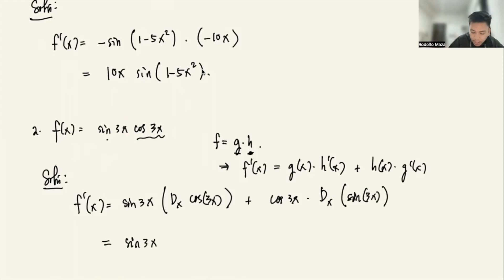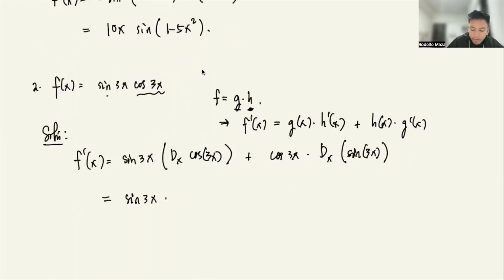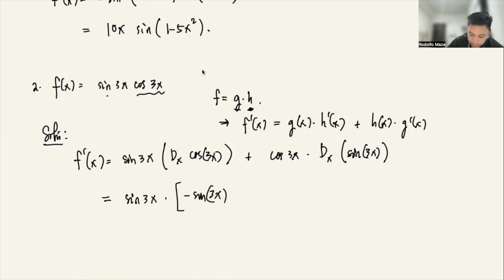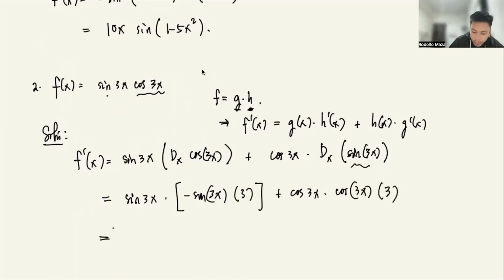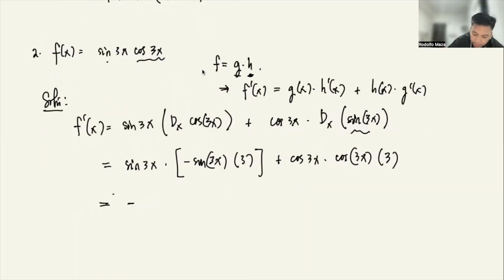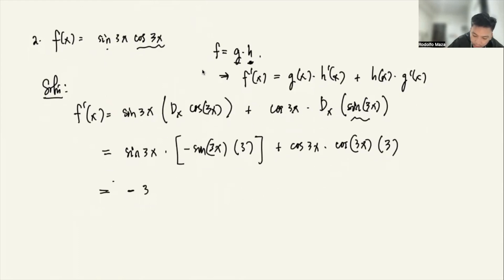So we have sine(3x). The derivative of cosine(3x) — using the chain rule — is negative sine(3x) times 3 (derivative of the inside). Plus cosine(3x) times the derivative of sine(3x), which is cosine(3x) times 3. So this becomes negative 3 sine squared(3x) plus 3 cosine squared(3x).